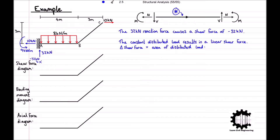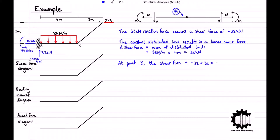To calculate the change in shear force from point A to point B, we need to calculate the area of the distributed load from point A to point B, which for this constant distributed load is simply 8 kilonewtons per meter times 4 meters, which equals 32 kilonewtons. As the shear force increases from point A to point B, at point B the shear force will be equal to negative 32 plus 32, which equals zero kilonewtons. The shear force increases linearly from negative 32 at point A to zero at point B.